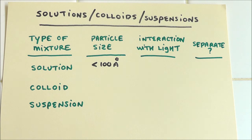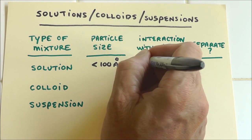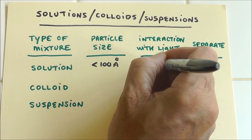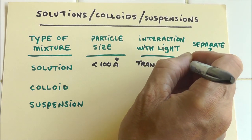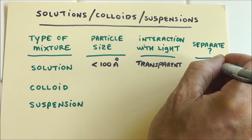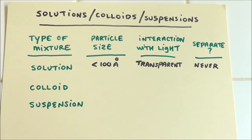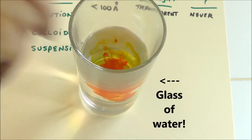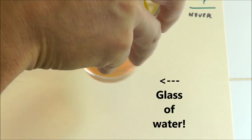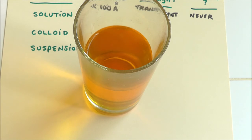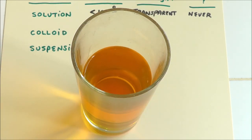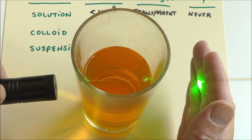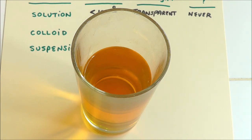Particles smaller than a wavelength of light aren't big enough to interact with it. So you can diagnose something as a solution if it's transparent and the particles never separate out. Here I've got a glass of water and I'll make a solution — even though it has a color, the light can still go through it. You can see it coming out the other end — there's my hand — it's coming out the other end.